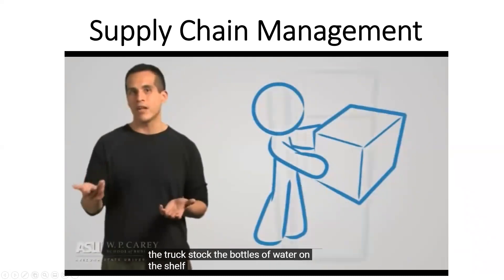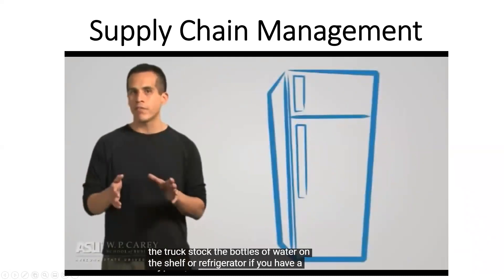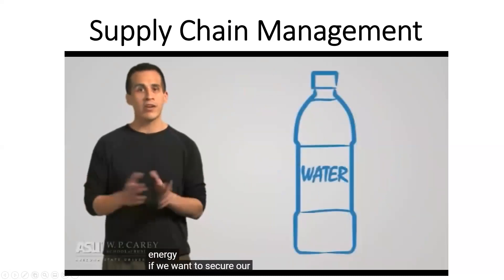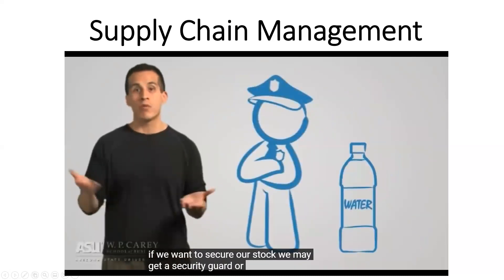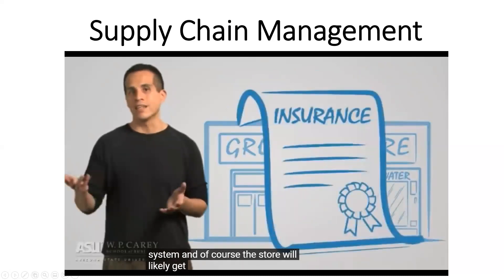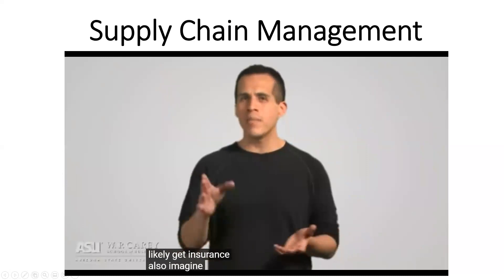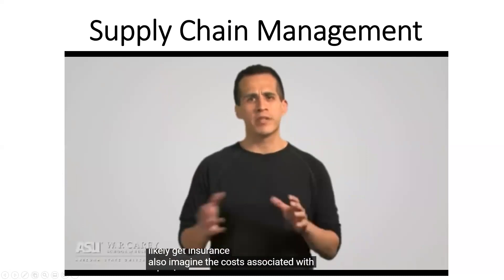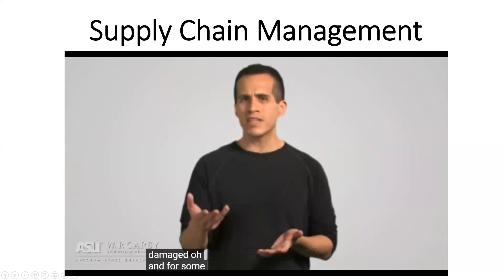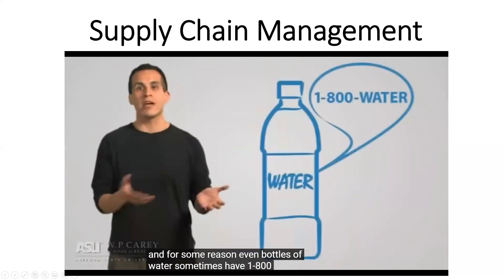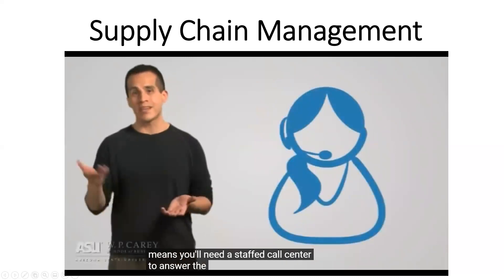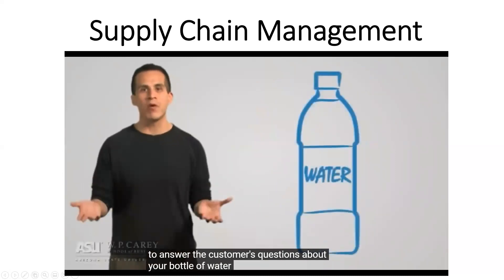If you have a refrigerator, you'll need energy. If you want to secure your stock, you may get a security guard or a security system, and the store will likely get insurance. Imagine the cost associated with returning and replacing bottles that are damaged. And for some reason, even bottles of water sometimes have 1-800 numbers, which means you'll need a staffed call center to answer customers' questions about your bottle of water.